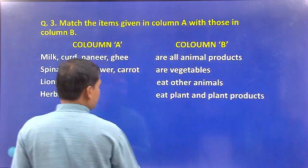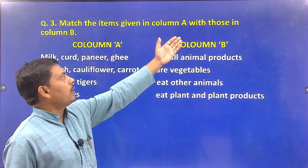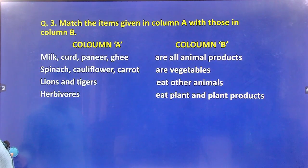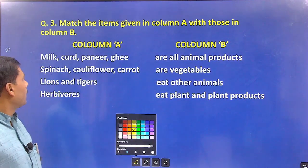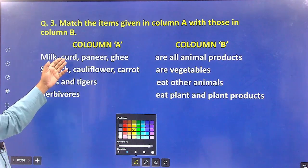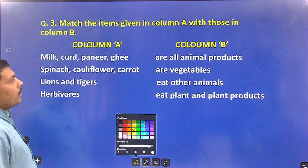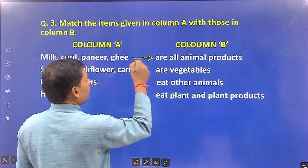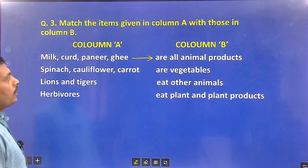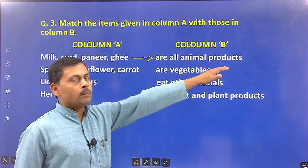The third question: Match the items given in Column A with those in Column B. Column A has the questions. Milk, curd, paneer, and ghee — make an arrow to Column B — milk, curd, paneer, and ghee are animal products.